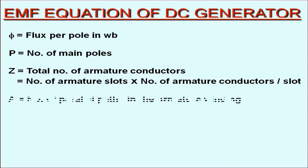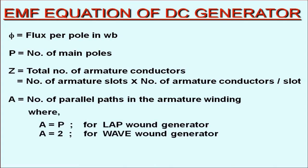Further, A is the number of parallel paths in the armature winding, where the number of parallel paths in case of lap-wound generator is equal to the number of main poles in the DC machine. On the other hand, the number of parallel paths in case of wave-wound generator is always 2 irrespective of the number of main poles.